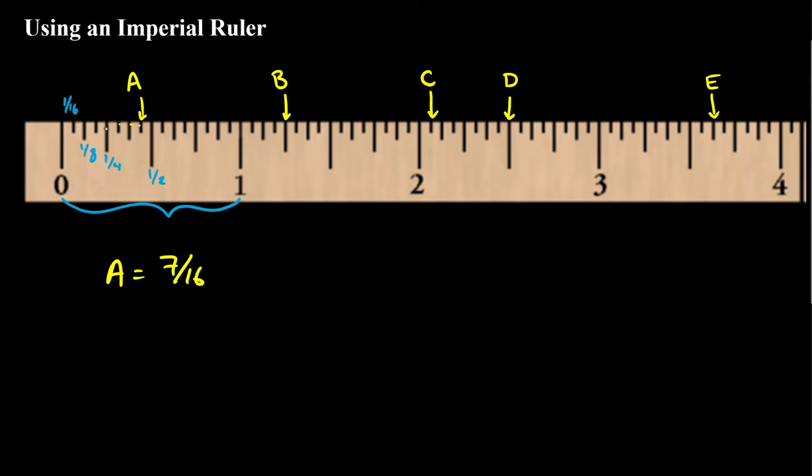Our next strategy is to try and identify that if this is the smallest division and you can see because it's the line that is the shortest, if it's the smallest division on here that's going to be a sixteenth. So we just have to count how many sixteenths has that been.